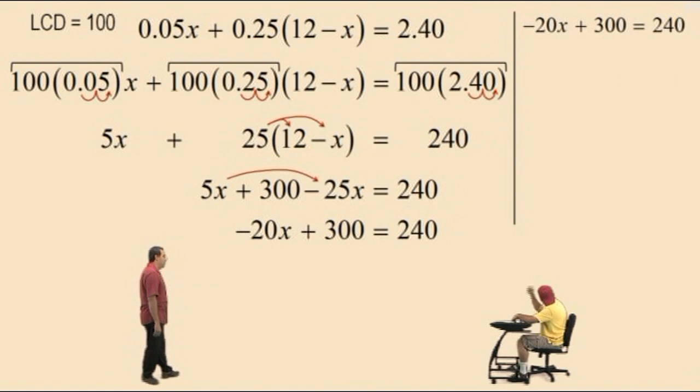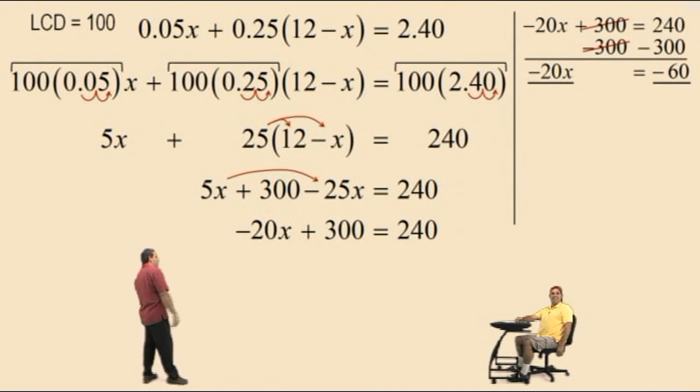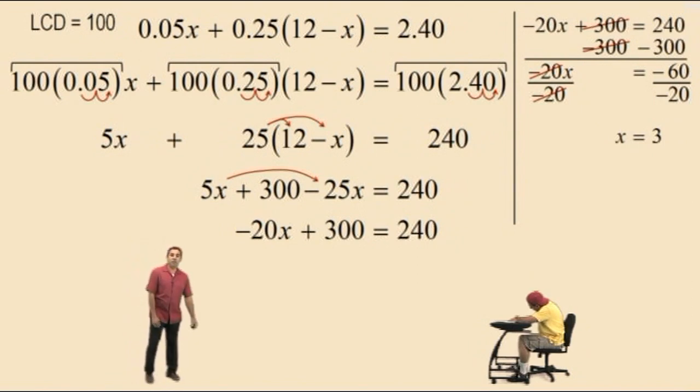What do we do next, Charlie? Subtract negative 300. That's right, that cancels out, leaves you with a negative 20x on the left. And 240 subtract 300 is a negative 60. Now, bring us home, Charlie, what do we do? Divide by negative 20. That's right, divide both sides by negative 20 to get the positive 1x, and x would be 3. So, that is our answer there. Whew!